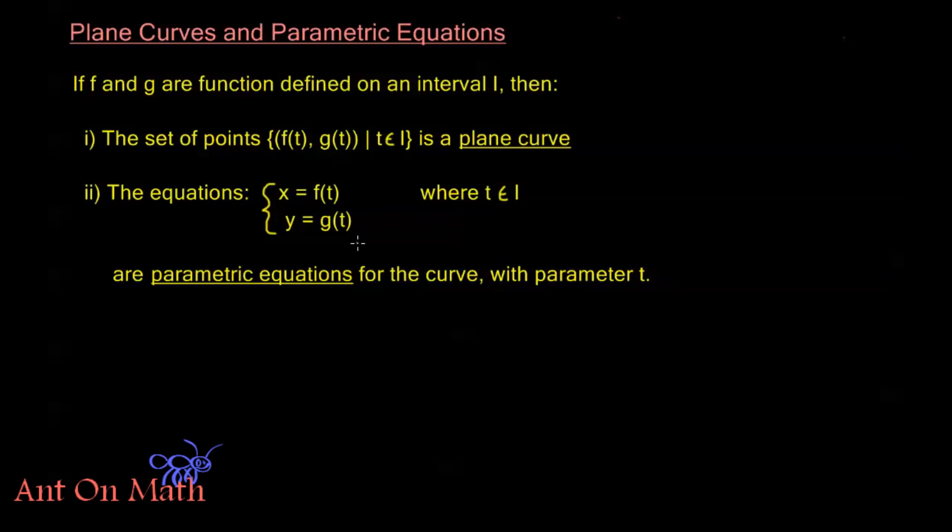Now what parametric equations are in general: we're taking some curve in space, and instead of writing it as a function - normally we would write something like y equals f(x) to describe some curve in space - what we're doing here is we're writing two different equations. We have x equals f(t) and y equals g(t).